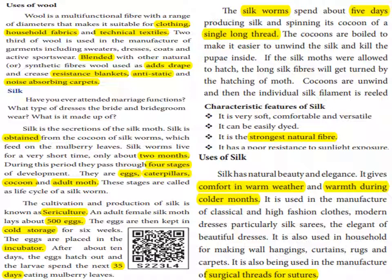The cultivation and production of silk is known as sericulture. An adult female silkworm lays about 500 eggs. After about 10 days, the eggs hatch and the larvae spend the next 35 days eating mulberry leaves.